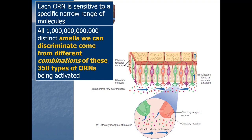In vision we only had four types of receptors — three cone types and rods. Here with smell we've got 350 different types, giving a vast number of possible combinations. That's why we can potentially distinguish a trillion different smells, whereas vision is much more limited.